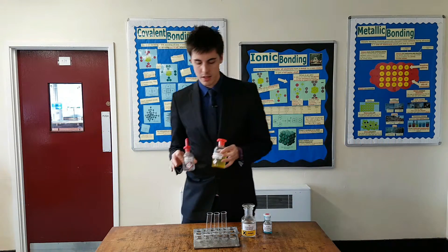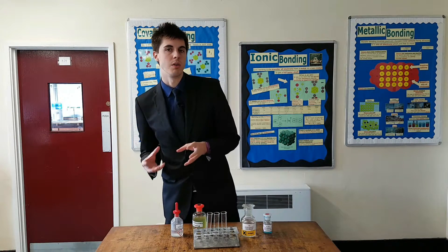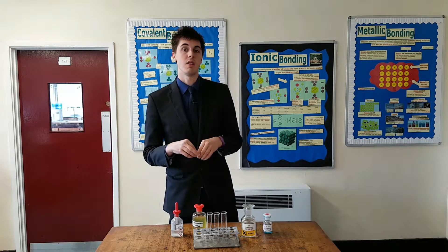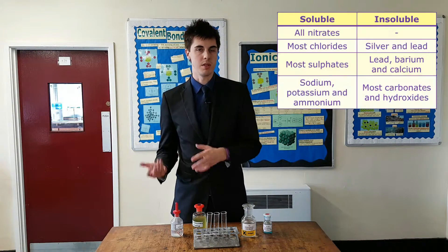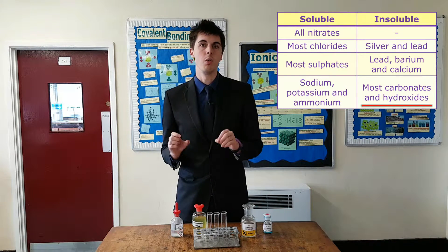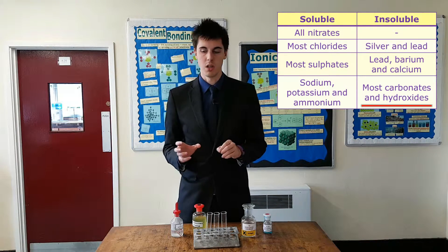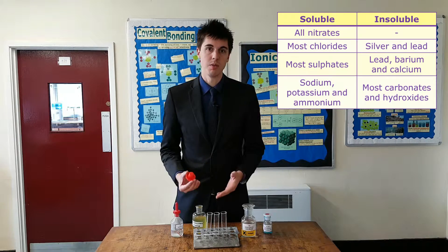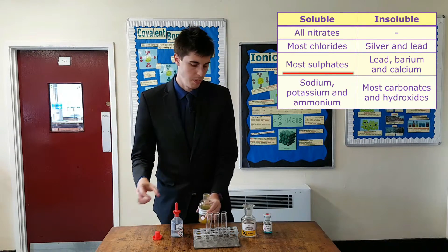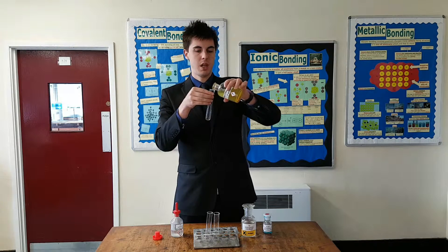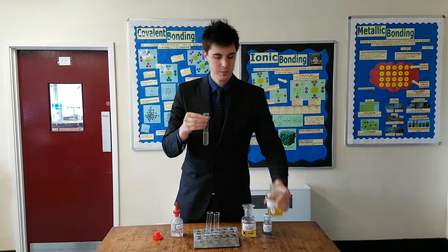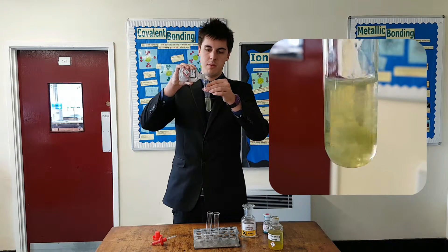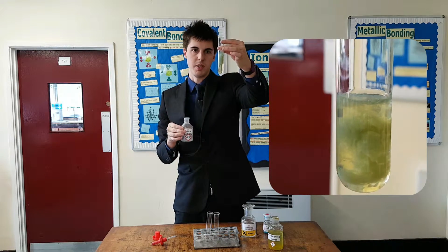You then use your solubility table and find out whether those products are going to be soluble or insoluble. Iron hydroxide is going to be insoluble - you look on the solubility table, as you can see on the right here, and most hydroxides are insoluble except for sodium, potassium and ammonium. The other product, sodium sulfate - most sulfates are soluble. So let's test it. If I take my iron sulfate and pop it into here, take a bit of sodium hydroxide and add it in. As you can see, I've got a precipitate forming.